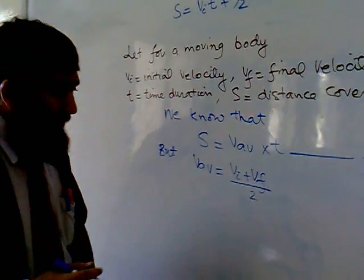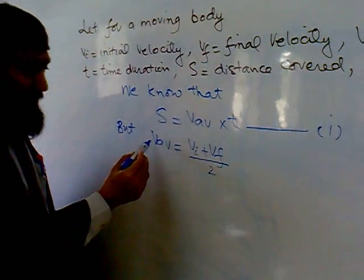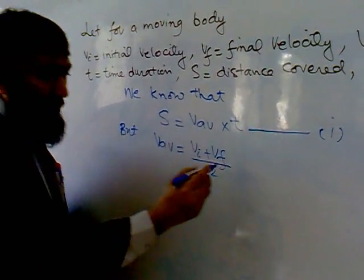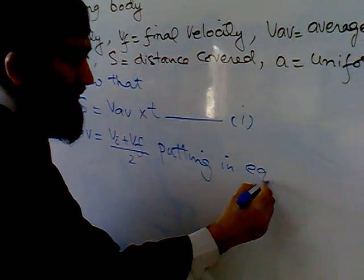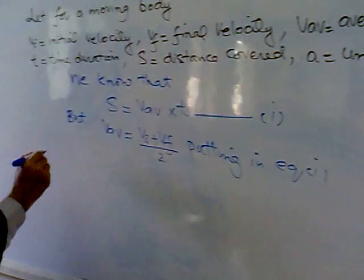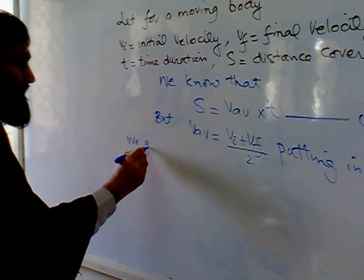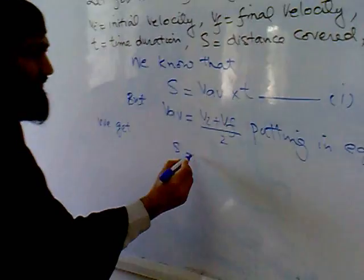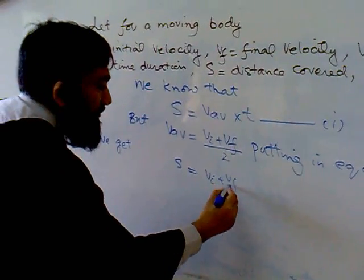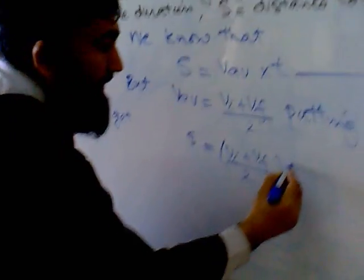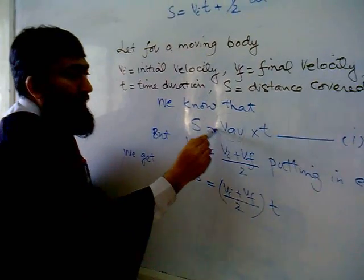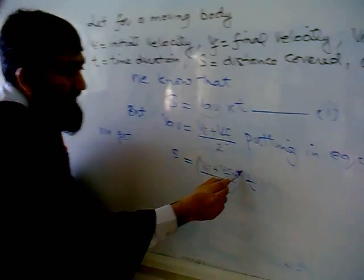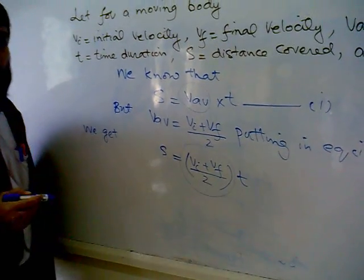Putting this value of v_average in equation number 1, we get s = (vi + vf)/2 × t. This is the same equation, but instead of v_average we put its value, vi plus vf divided by 2.